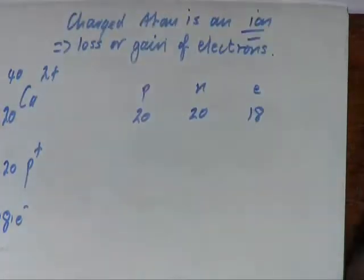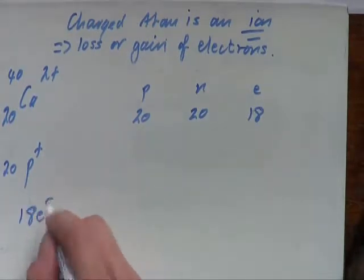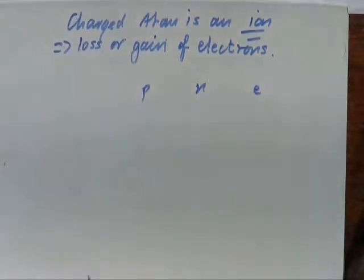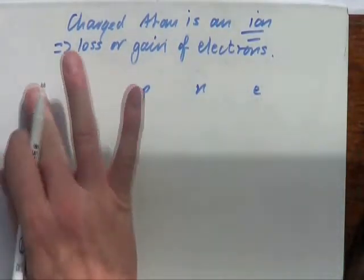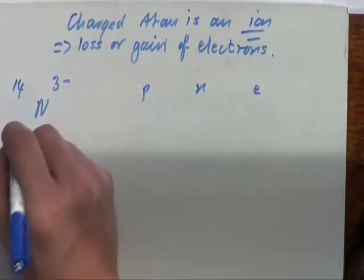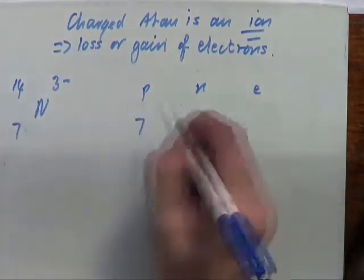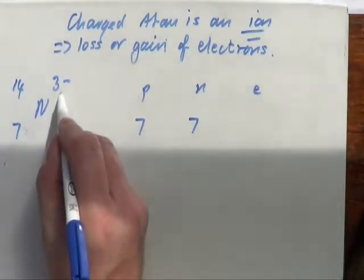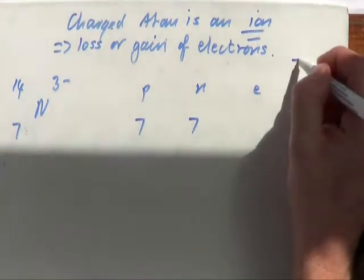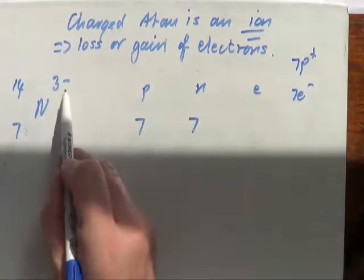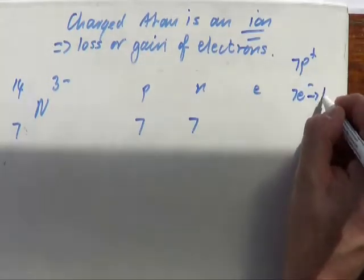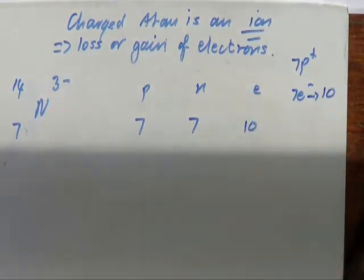Let's do a couple of negative ones. Take nitrogen with a 3− charge — 14 and 7. Protons must be seven, neutrons must be 14 minus 7 which is seven. We must have started with seven protons and seven electrons. It's three negative, so it must have gained three more electrons. Therefore there must be ten electrons in our nitrogen ion.